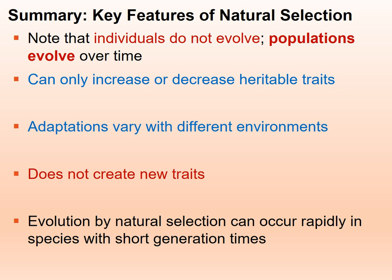Evolution by natural selection can occur very rapidly in species with short generation times. Bacteria, for example — like MRSA — can double with a generation time as little as 20 to 30 minutes. So evolutionary changes over the course of new generations can happen very quickly in those types of organisms.